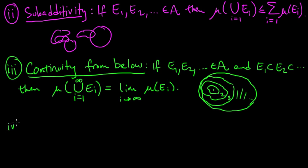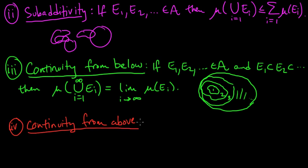The fourth property is similar. So the fourth property says, well it's called continuity from above. And it's very similar, but with one important distinction from continuity from below. So again we have a sequence. And this time, it's a descending sequence, in the sense that E₁ contains E₂, contains E₃, and so on.